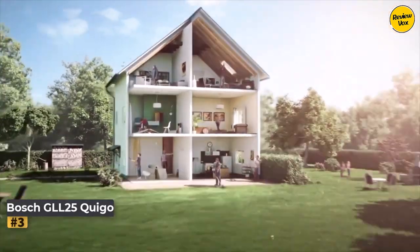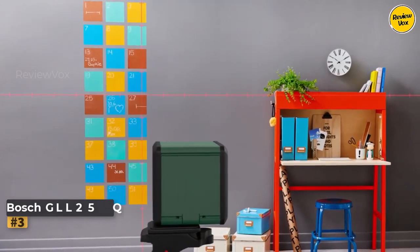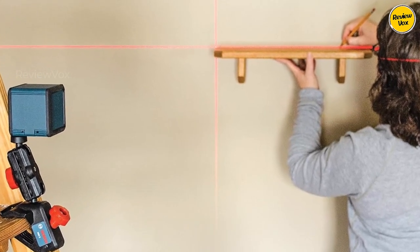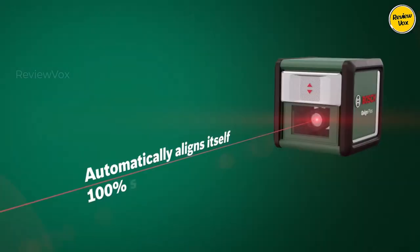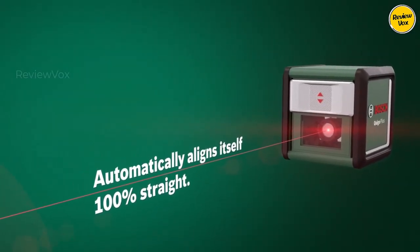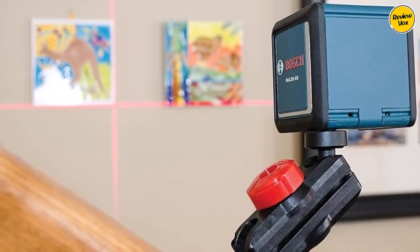Bosch GLL-25 Kigo. The Bosch Crossline Laser Level stands out with its distinctive cube-like design and an adjustable clamp, catering to DIYers seeking simplicity with dual-axis beams. Unlike some counterparts, this device projects both vertical and horizontal lines, facilitating precise right angles without the need for manual plumb bobs.